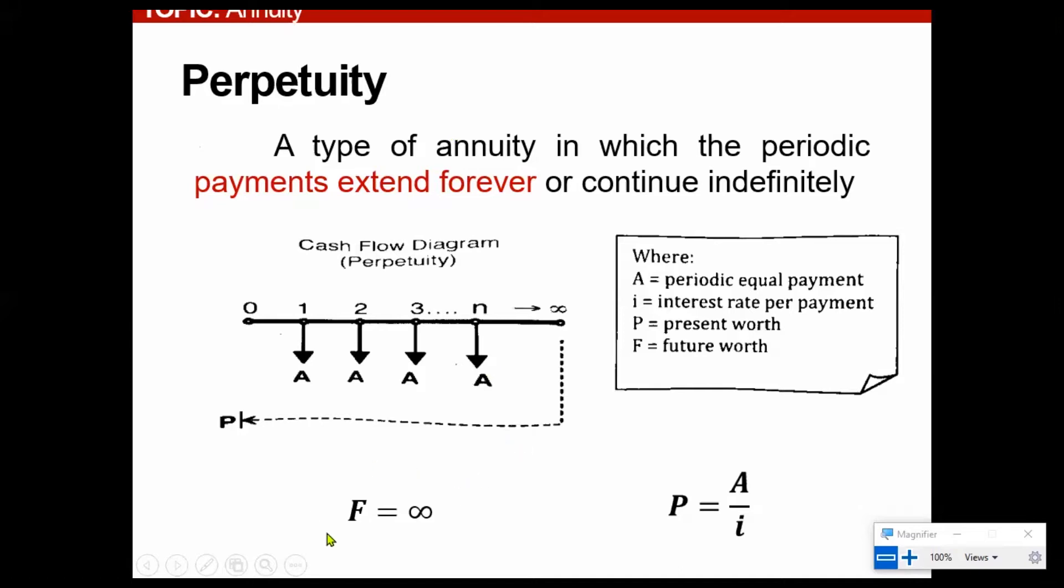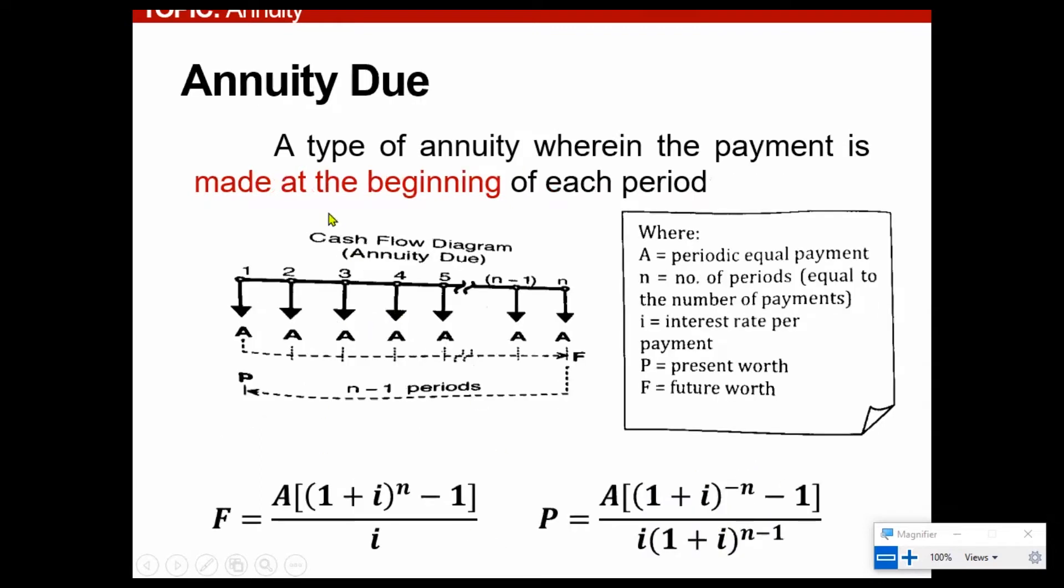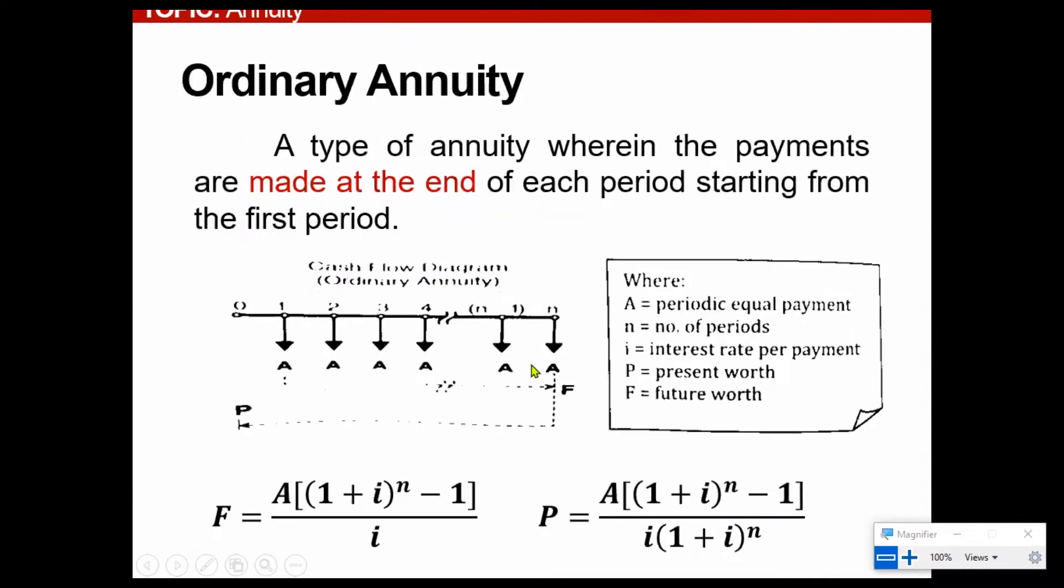Since the formula is straightforward, future worth is actually an infinite value of money, and then for the present amount, just know the amount of amortization and divide it by the interest, you can now have the present worth. So very straightforward, P is equivalent to A over I. In comparison to annuity due, deferred annuity, and then ordinary annuity.